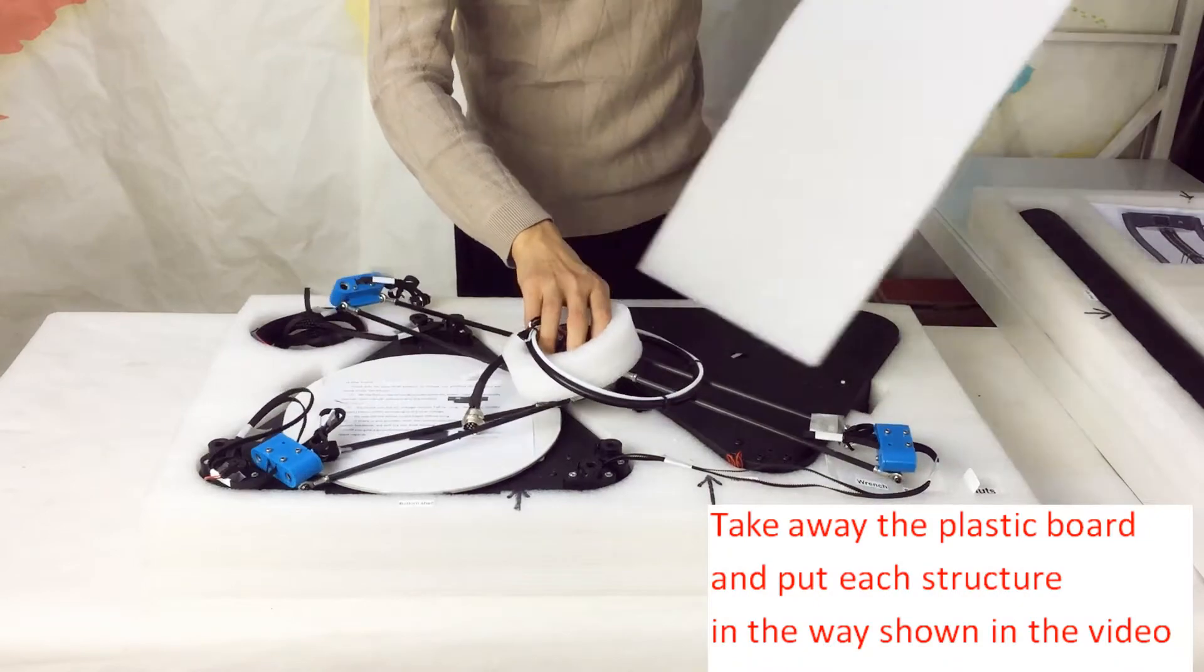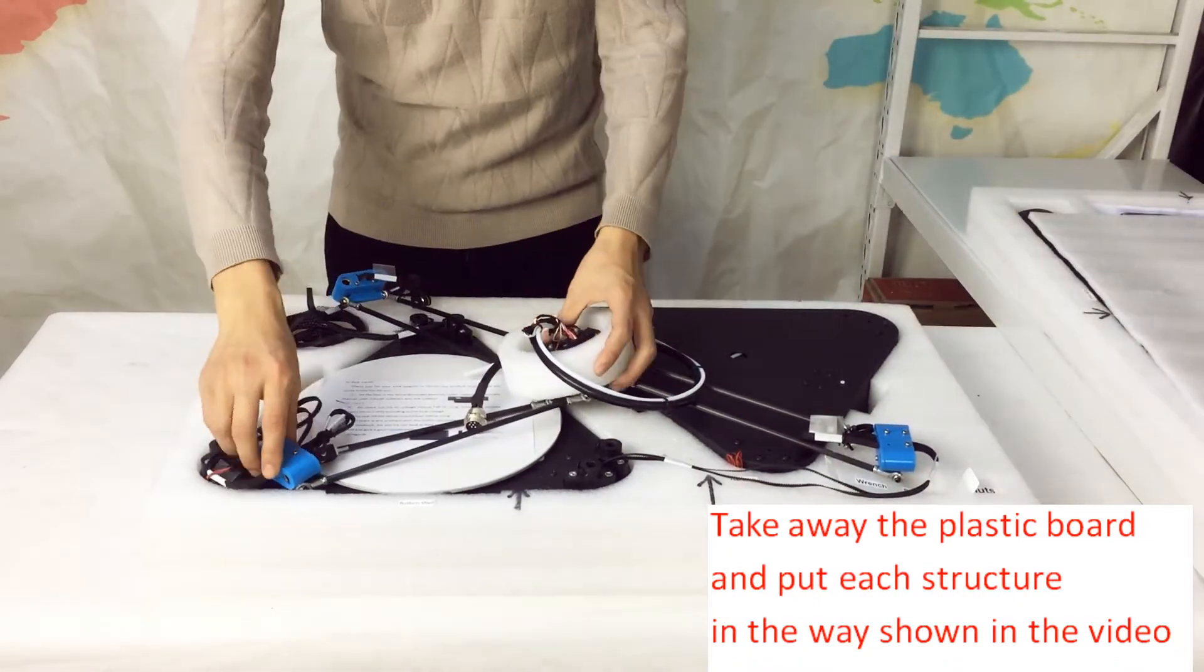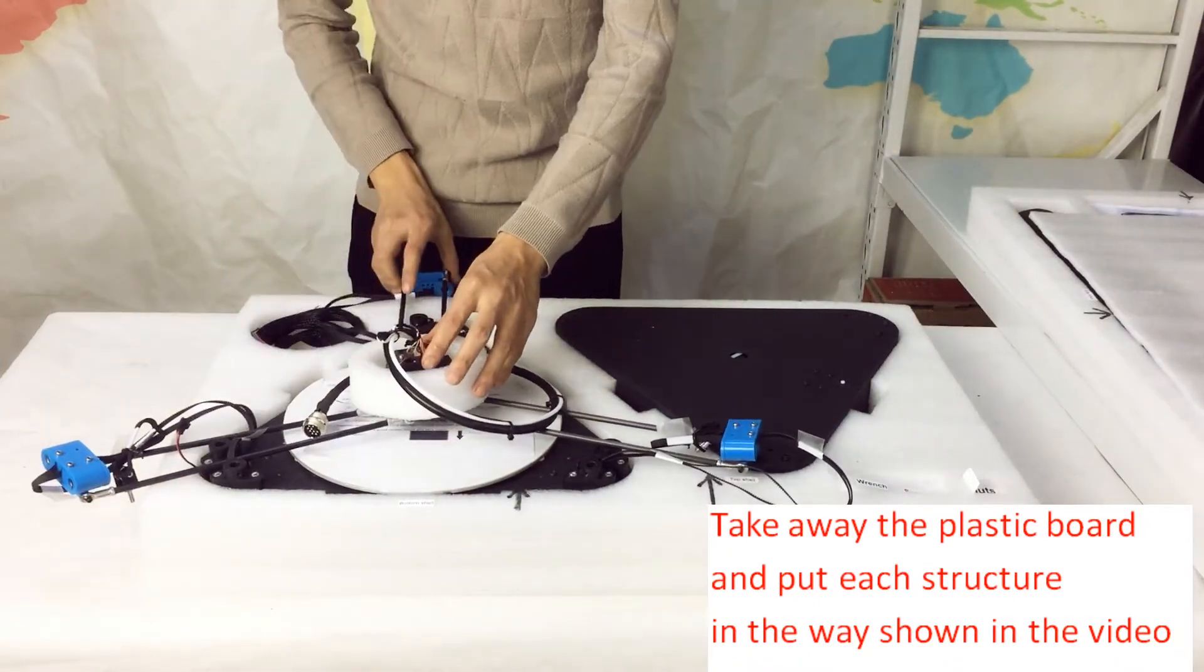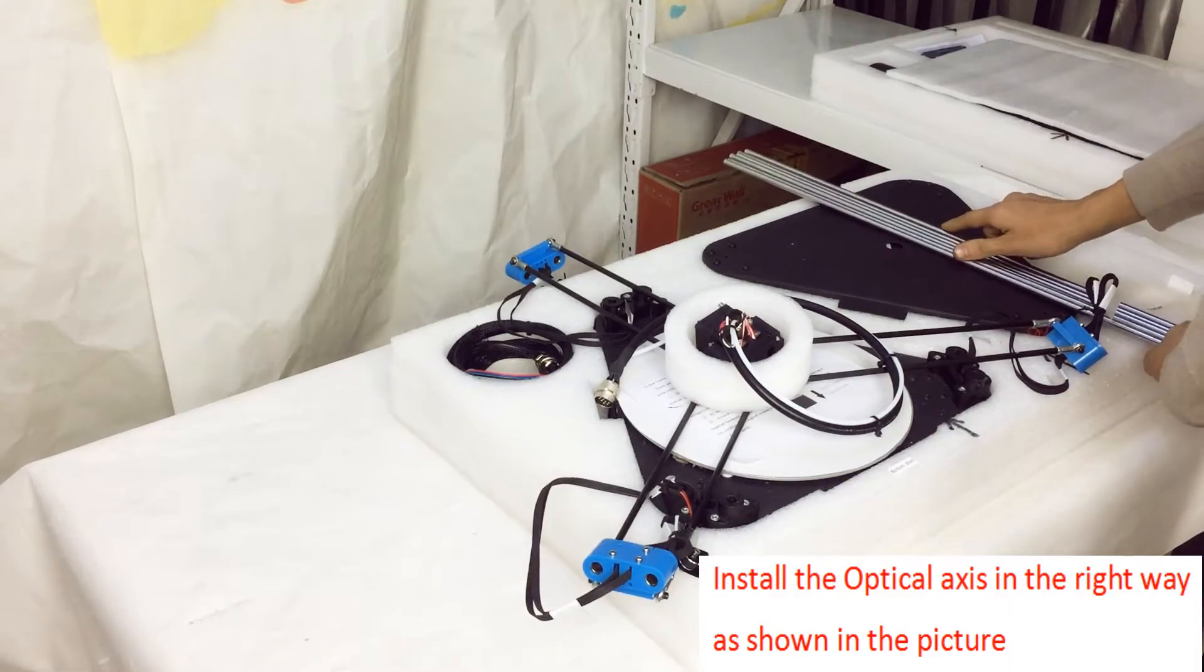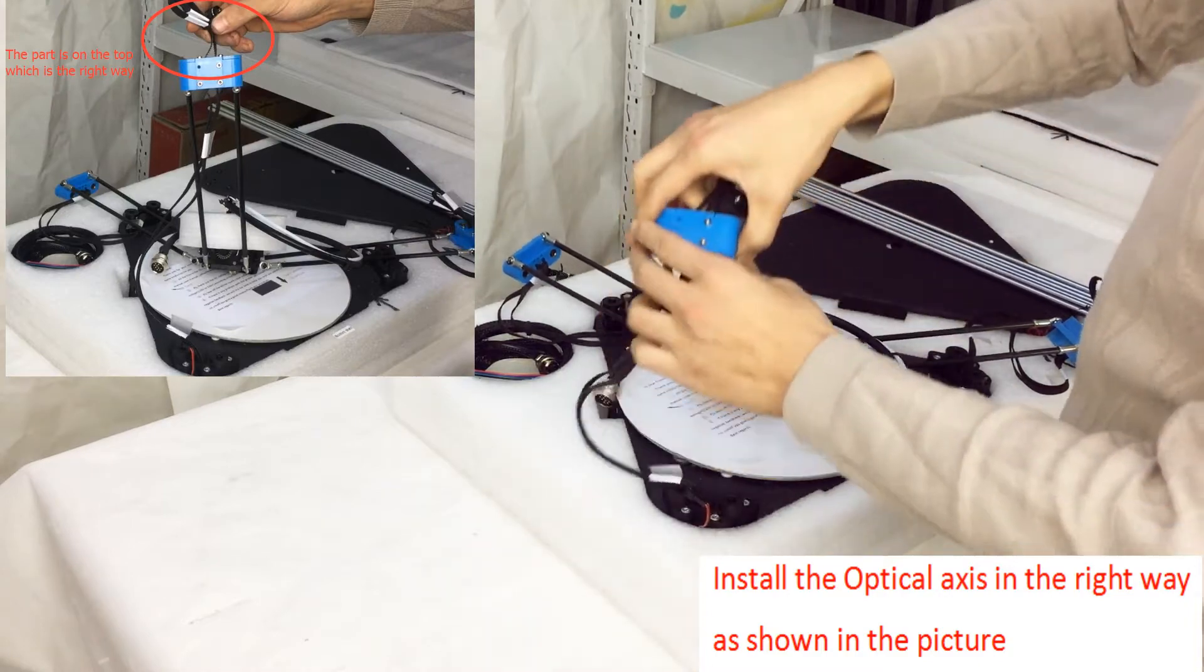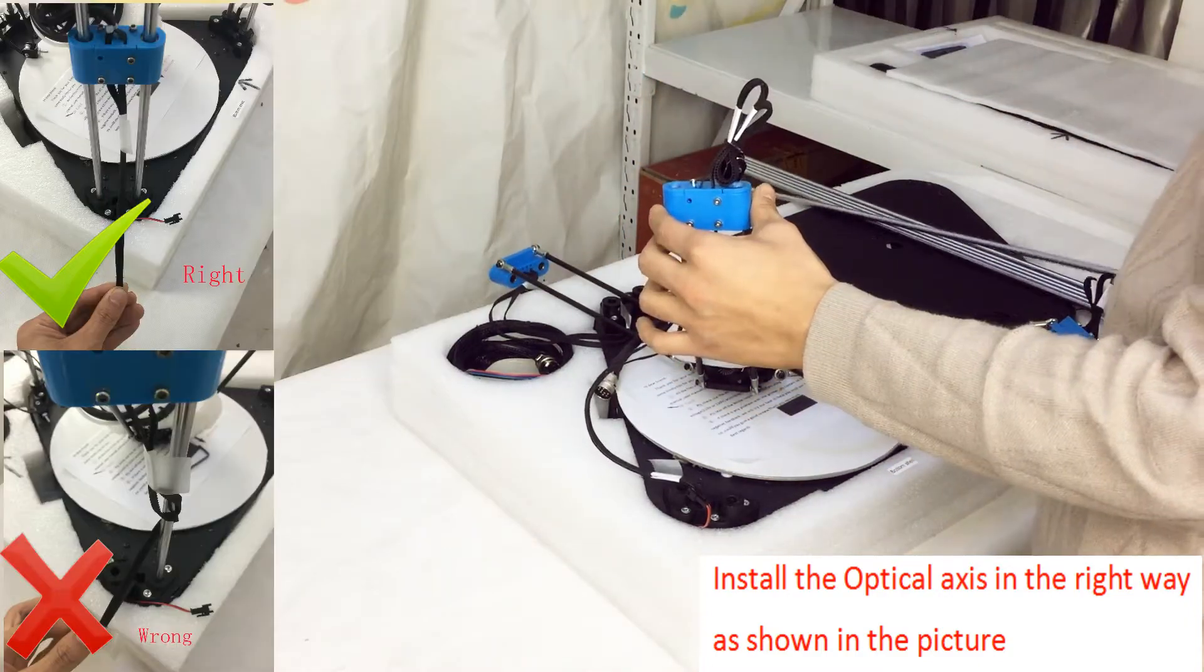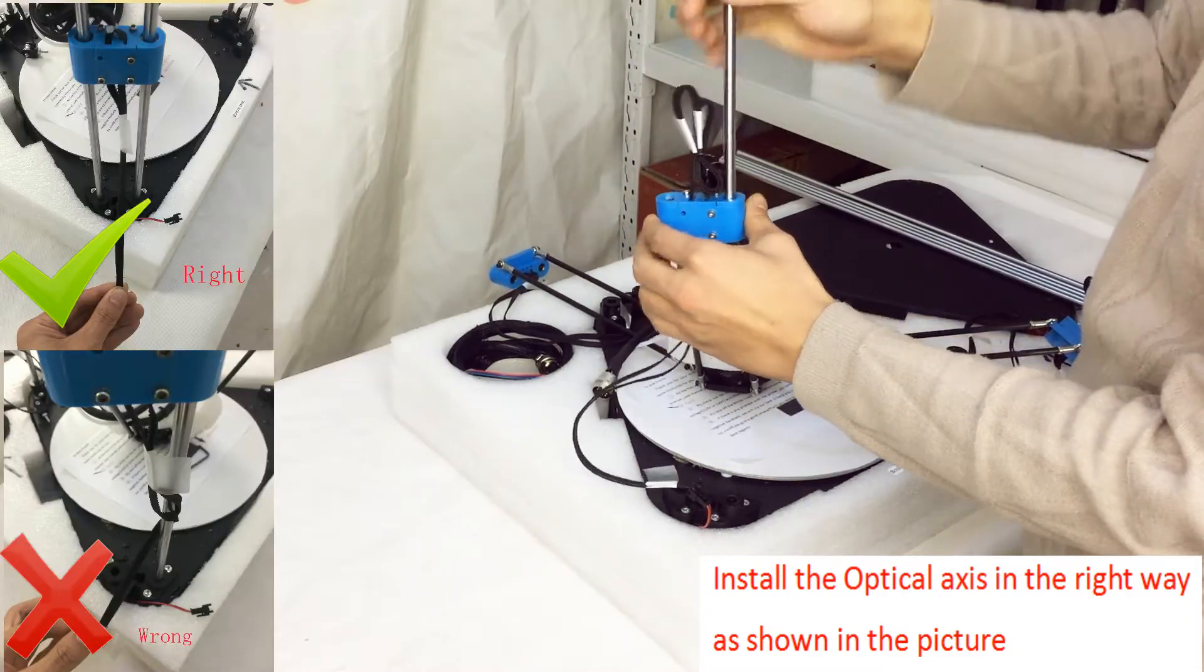Take away the plastic board and put each structure in the way shown in the video. Install the optical axis in the right way, as shown in the picture.